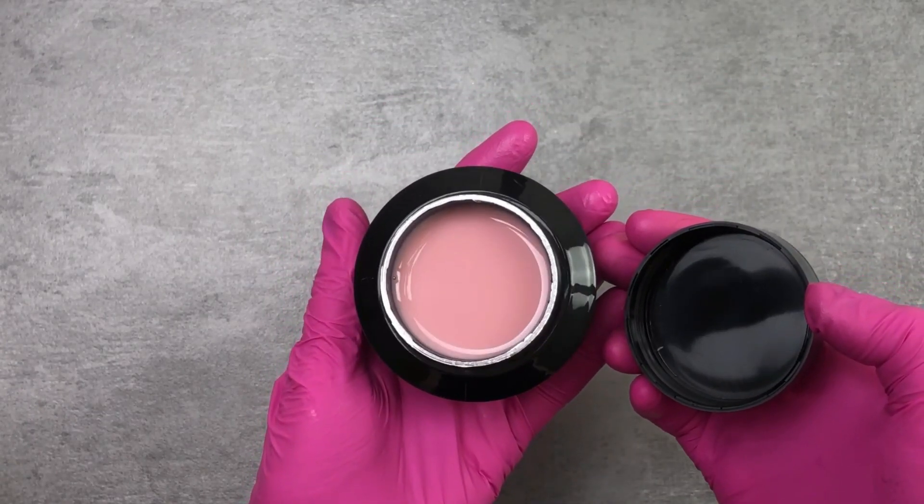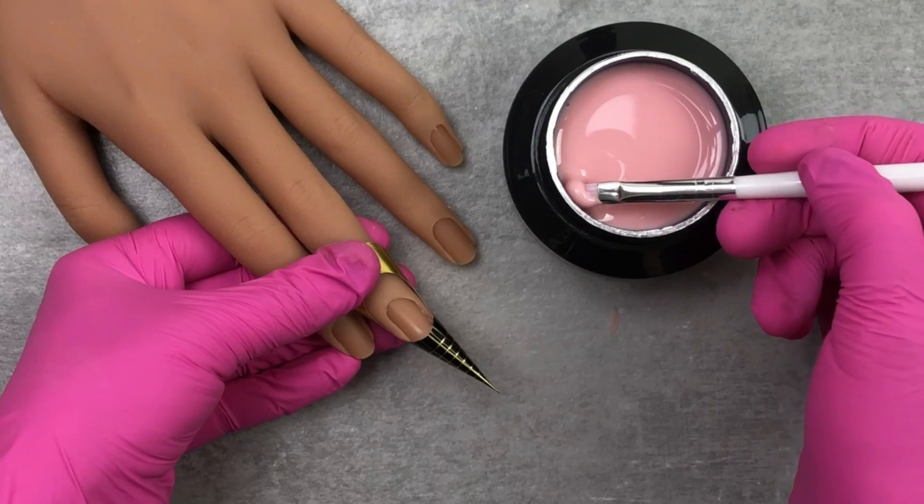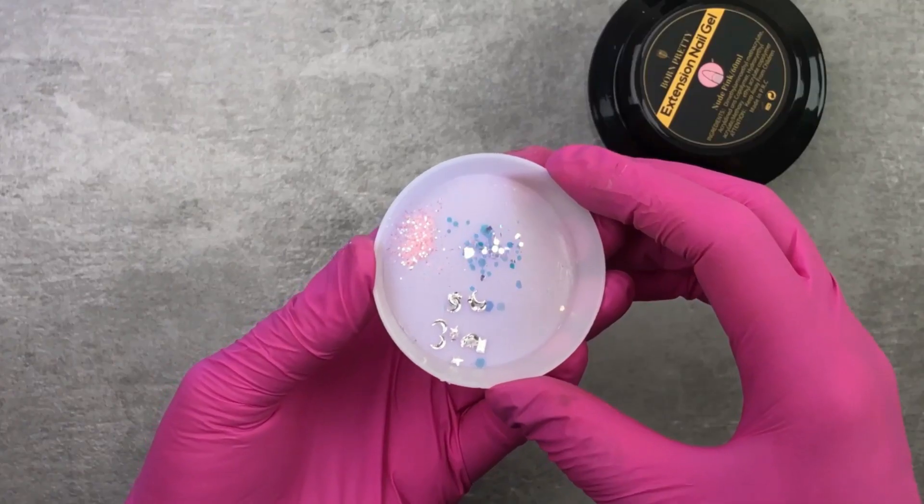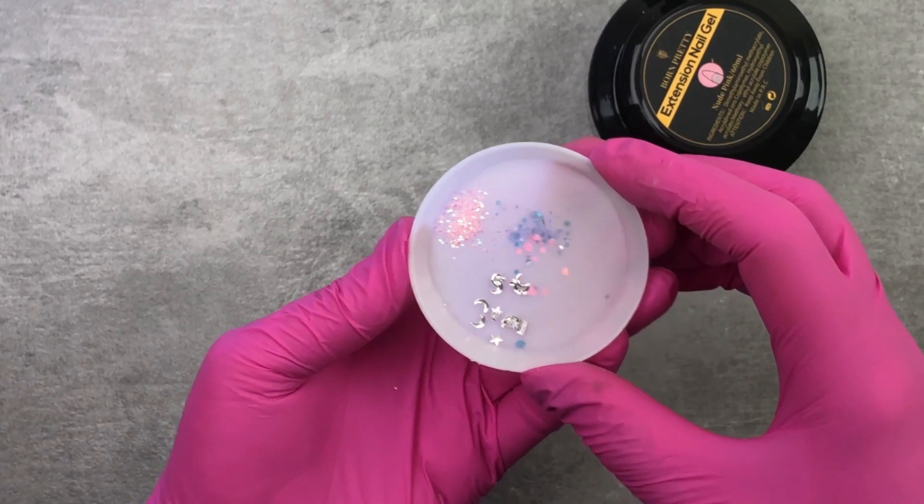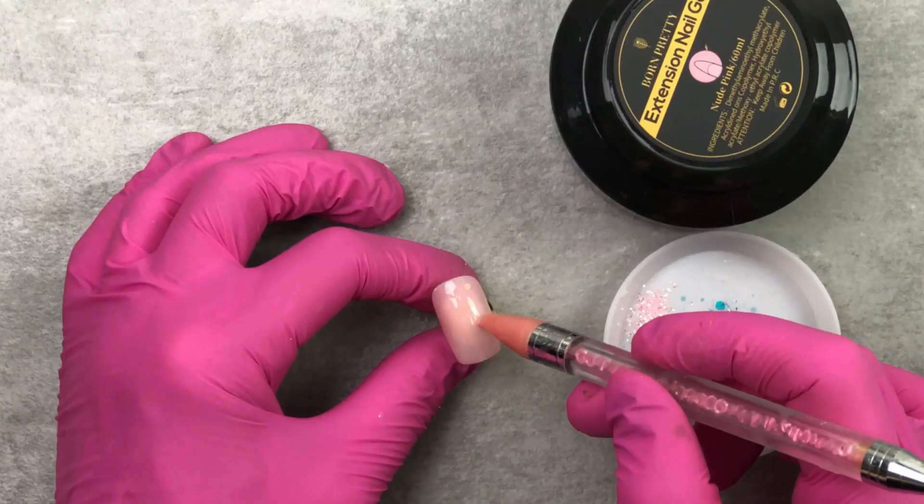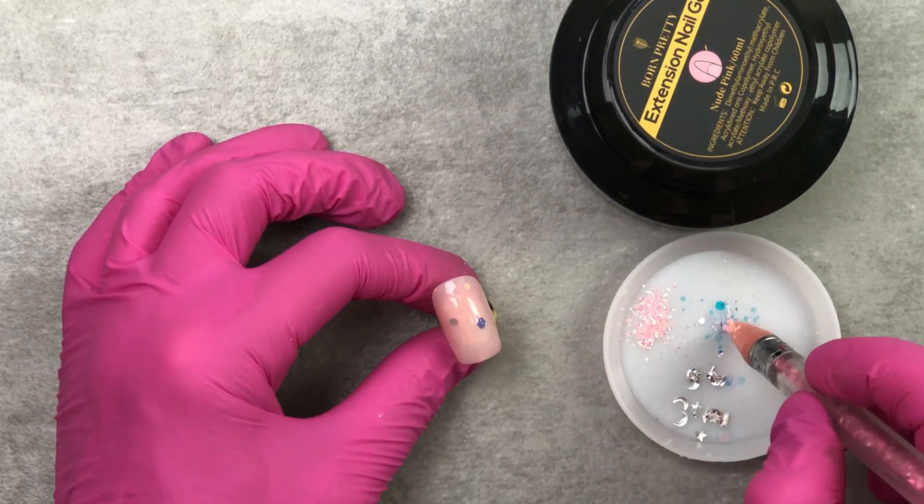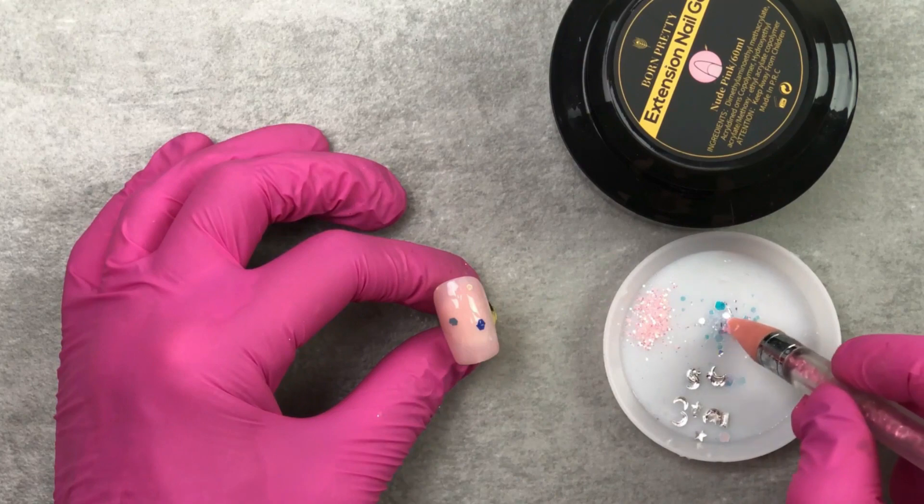Next is the extension nail gel. And you can use this to extend the nail. It's like a builder gel, but we want to show you a different way that you can use this also. So I have some glitter and nail decorations. So prep the nail and apply the gel polish color that you want for the base and cure. Then dab on some glitter here and there.